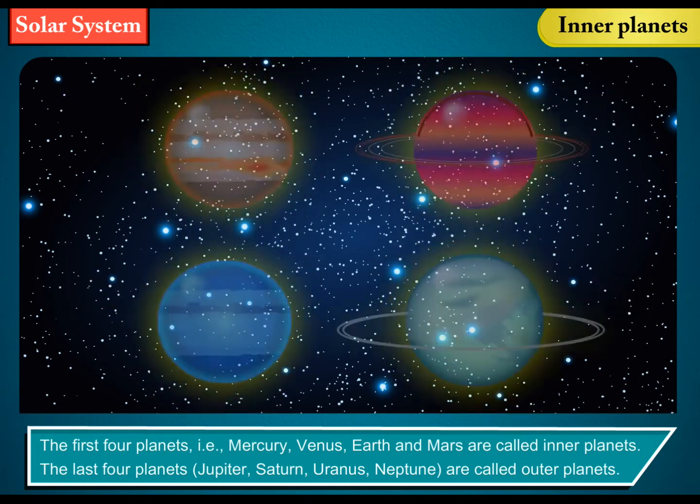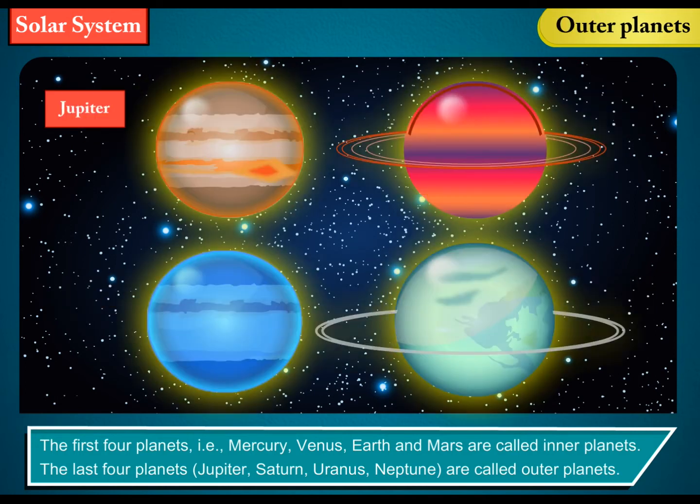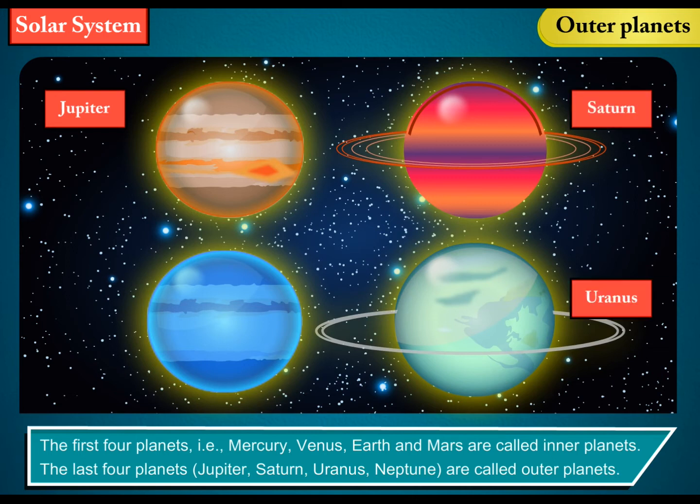The last four planets—Jupiter, Saturn, Uranus, and Neptune—are called outer planets.